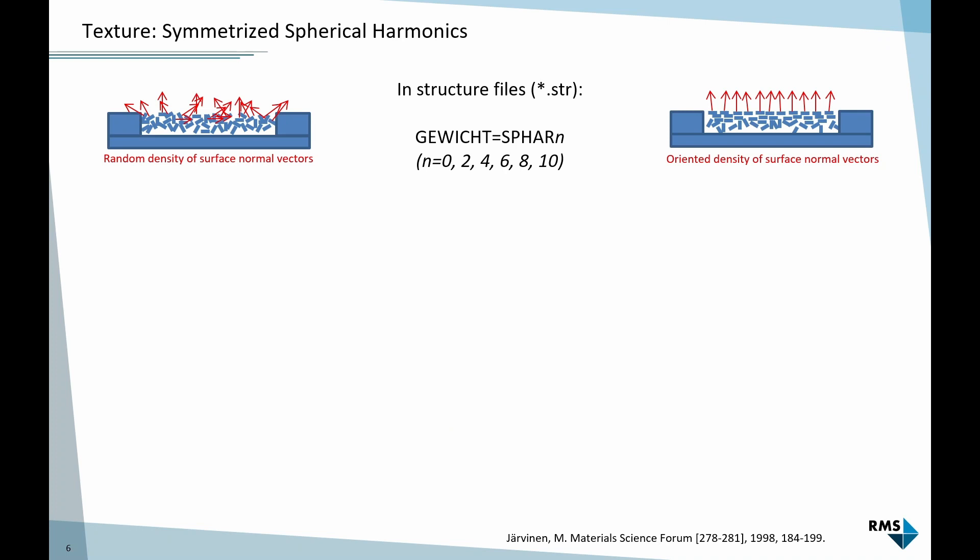The way this is refined in Profex, or actually in BGMN, is the Gewicht parameter. If we use this keyword SPHAR, which is short for Spherical Harmonics, that is the mathematical model used to refine the texture. We can choose the order of the polynomial, but we can only choose even numbers between 0 and 10. Any other number will cause an error message.